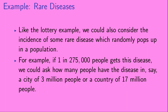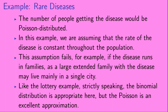Similarly, we could consider the incidence of some rare disease which randomly pops up in a population. For example, if 1 in 275,000 people gets this disease, we could ask how many people would have the disease in a city of 3 million or a country of 17 million people. The number of people getting the disease would be Poisson distributed. We should note that we are assuming the rate of the disease is constant throughout the population — this assumption fails if the disease runs in families. And, strictly speaking, the binomial distribution is appropriate here, but the Poisson distribution is an excellent approximation.